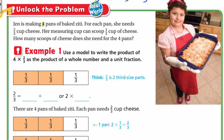She is making four pans and she needs two thirds cup for each pan. Four pans, each needing two thirds, means we'll do multiplication to find the total number of cups. Her measuring cup holds only one third cup, so after we multiply 4 × 2/3, we need to express it as how many thirds — or how many times one third. We'll use a model to write the product of 4 × 2/3 as a product of a whole number and the unit fraction one third.